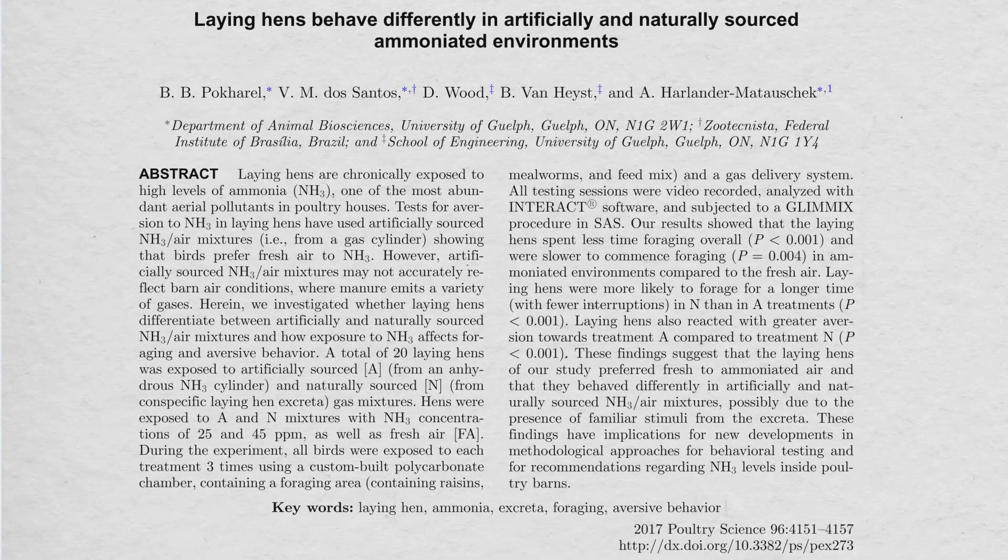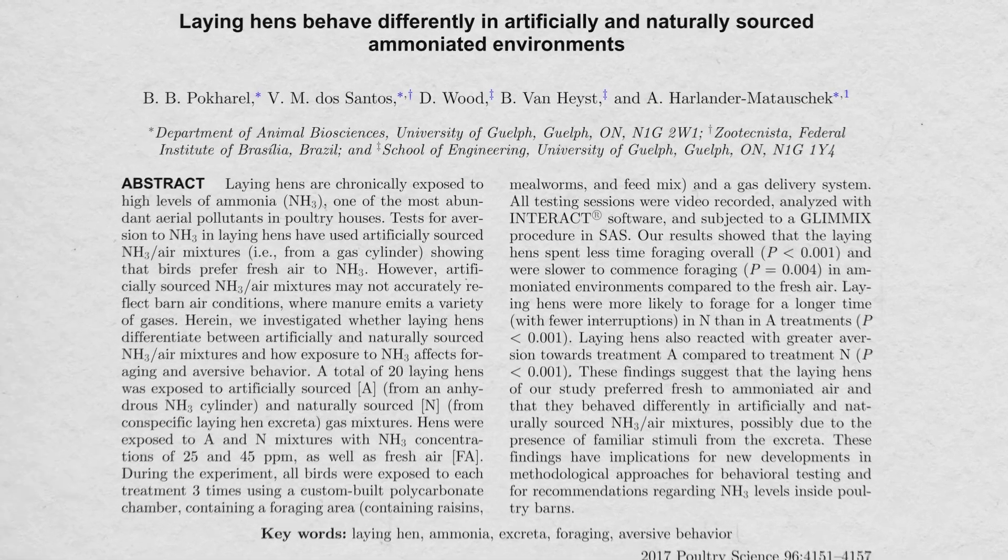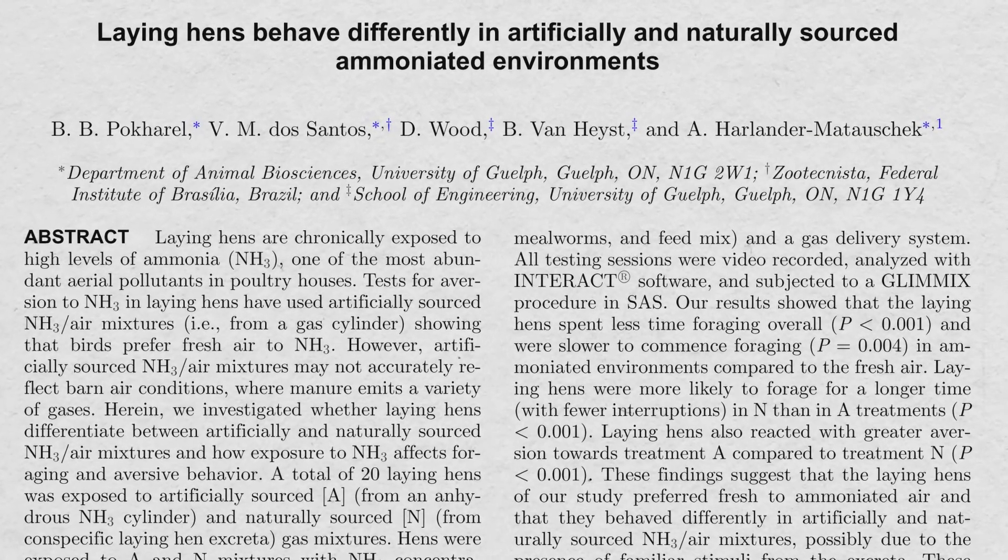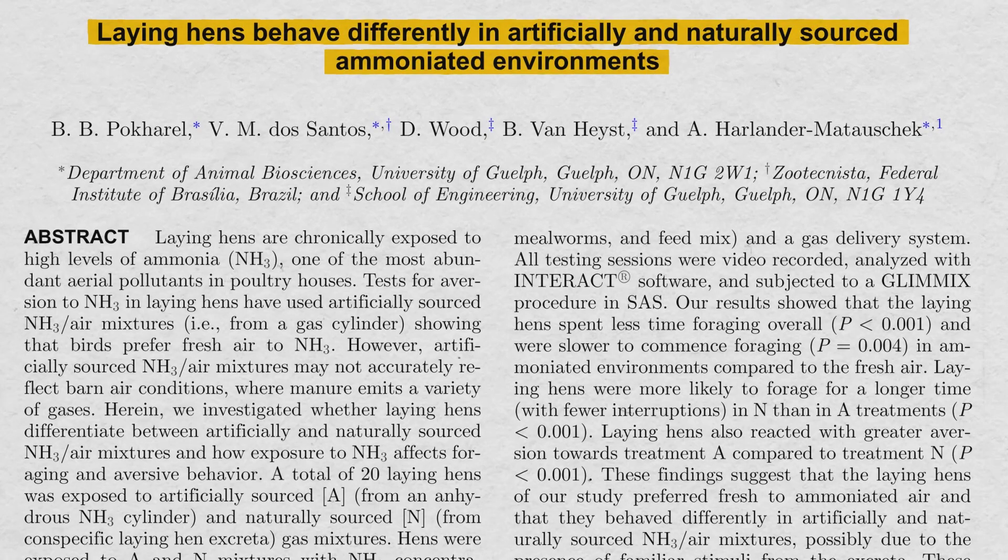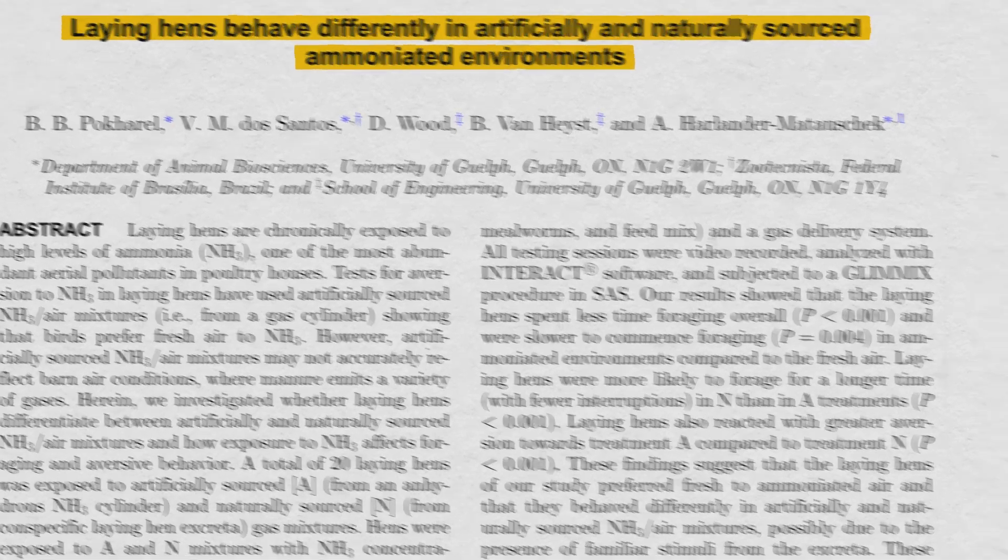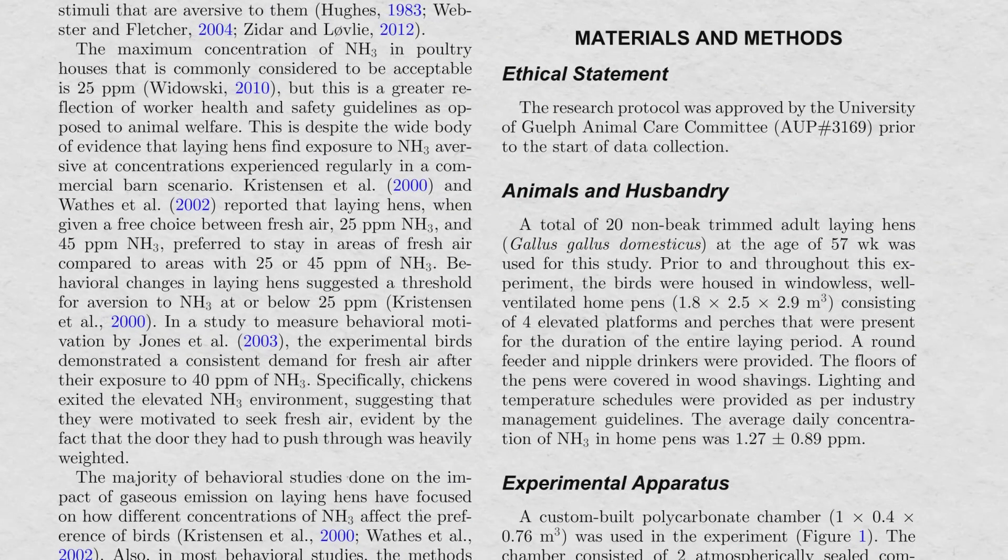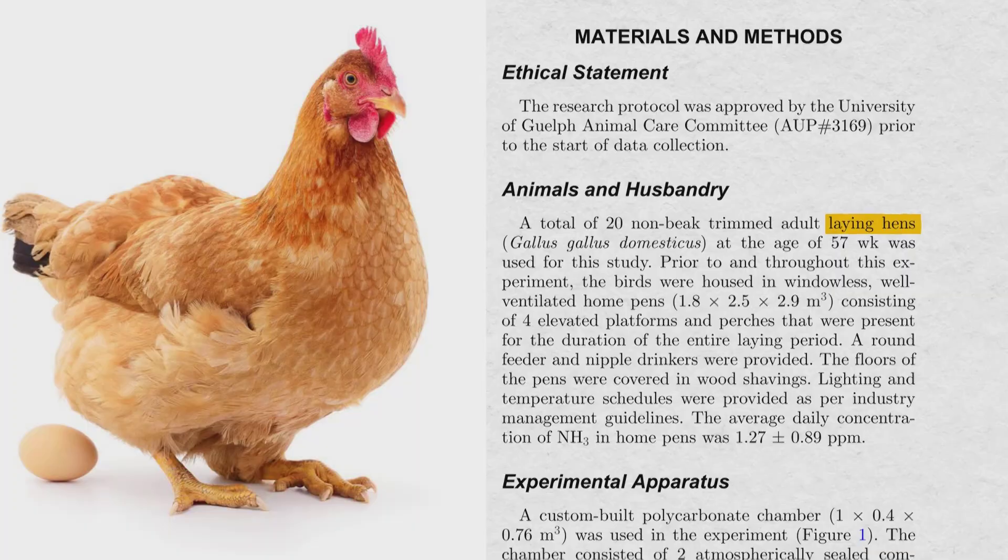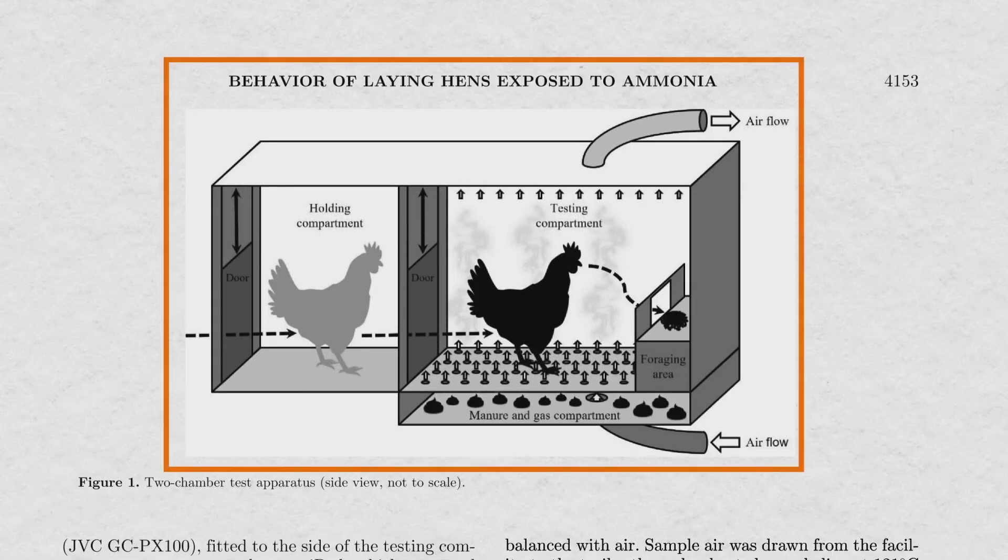Now, let's look at this example, which is quantitative method. This is an experimental study where researchers are looking at the impact of ammonia in laying hens. Now, let's go to the methods section. You can see the animals used here. The animals used in the study are laying hens. And then you can see the apparatus used for the study here.